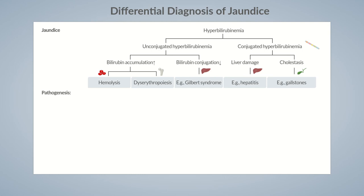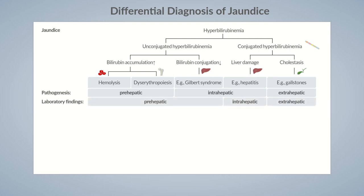Jaundice can be differentiated into three types based on the cause and the location of the pathology: prehepatic, intrahepatic, and extrahepatic. The diseases within each group usually show similar laboratory findings. However, there's an important exception: although Gilbert's syndrome is the result of a gene defect apparent in hepatocytes, its laboratory findings are similar to those of other diseases with prehepatic jaundice.